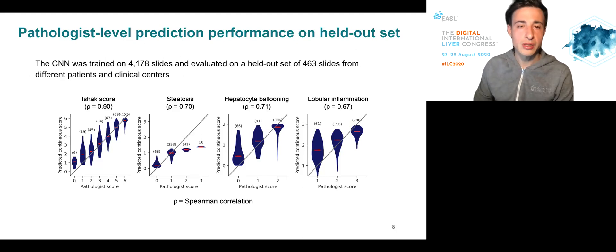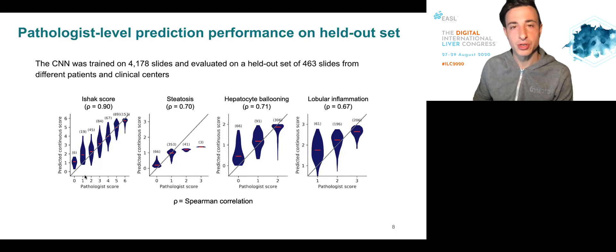Also note that the predictions for the Ishak fibrosis score here are obtained solely from H&E biopsy imaging, while typically pathologists use trichrome staining for scoring fibrosis.